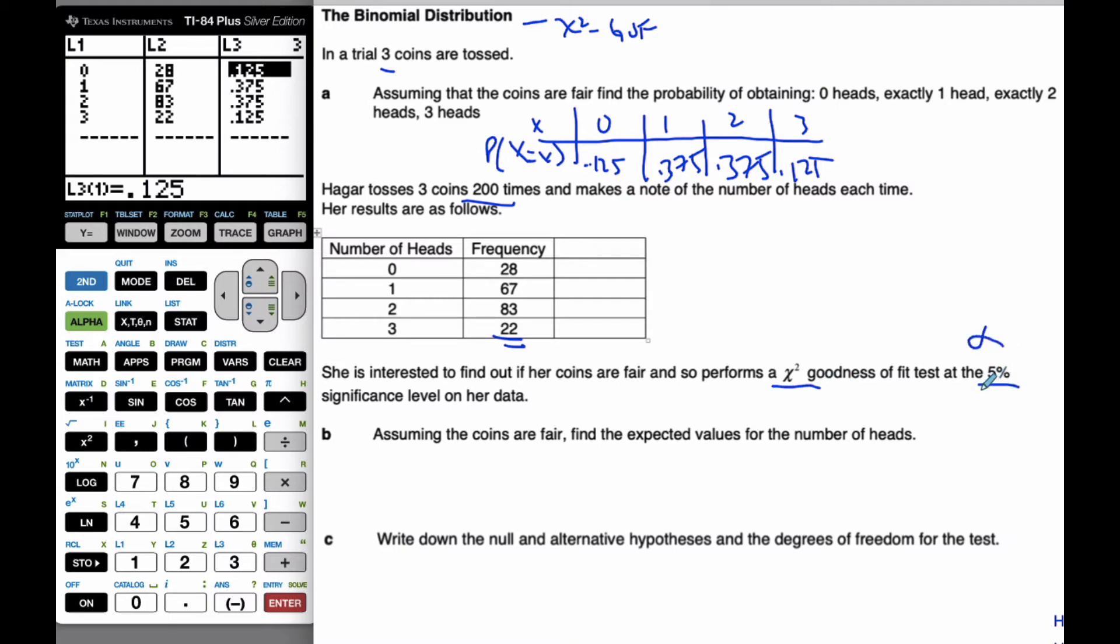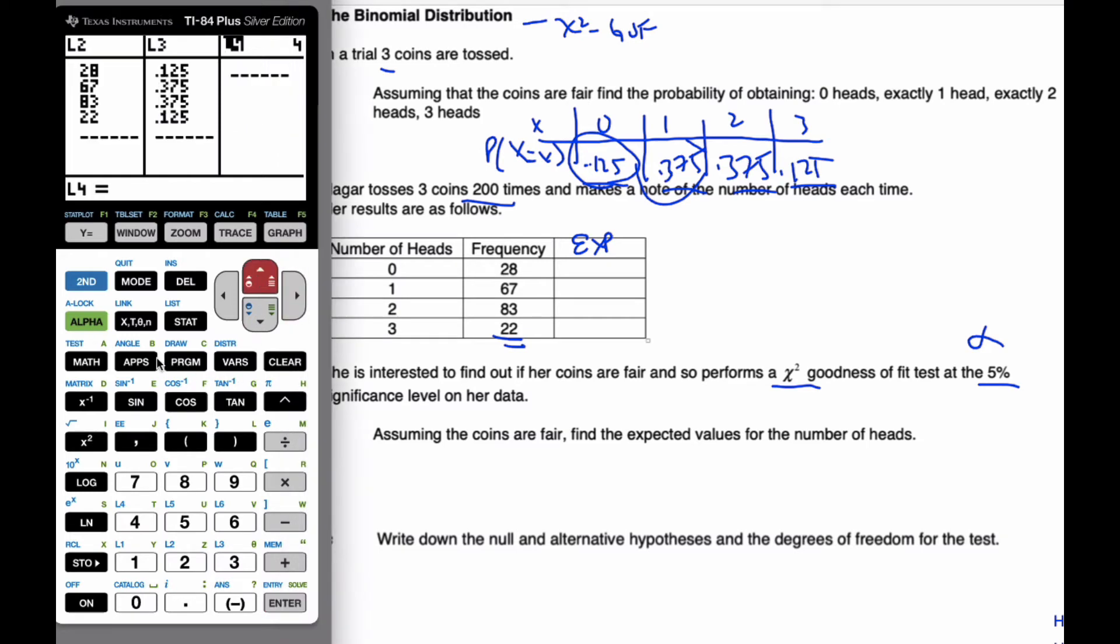So, alpha is 5% level. If these are our probabilities, then we can actually find the expected values here by taking these probabilities and multiplying them by 200. So, if I go to column four, I'm going to go 200, which is how many times she tosses the coins, times my L3.